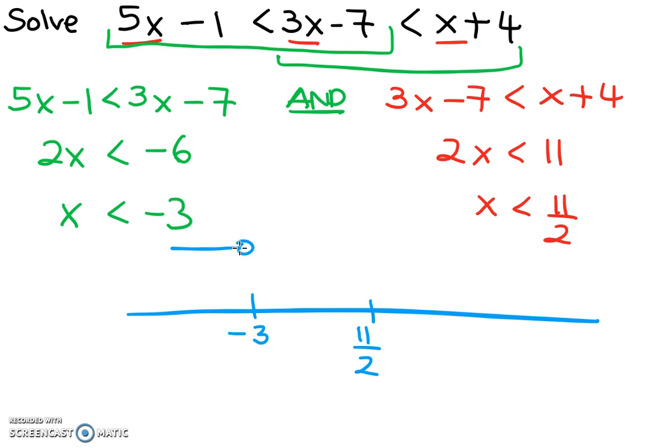so less than negative 3 to the left-hand side, less than 11 over 2 also to the left-hand side. As you can see, the intersection point is over here,